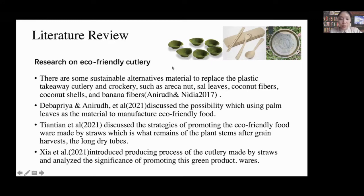We did the literature review on eco-friendly cutlery. Some sustainable alternative materials can be used as material for cutlery, such as areca nut, sal leaves, coconut fibers, coconut shells, banana fibers, and palm leaves. In China, straws which are what remains of the plant after harvest are more and more popular to be used to manufacture eco-friendly products.